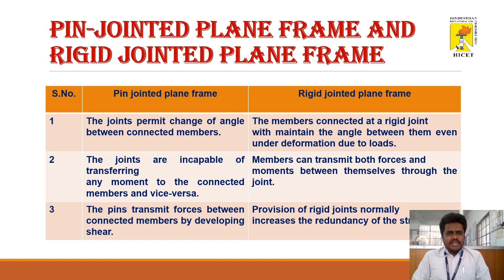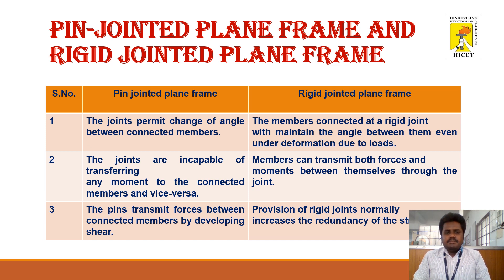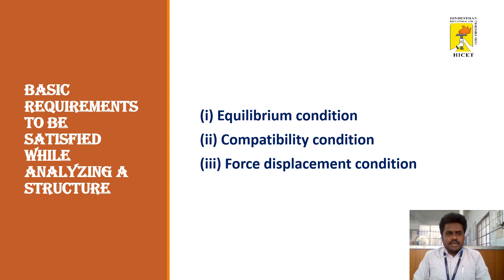Comparing pin jointed plane frames and rigid jointed plane frames: in pin jointed frames, joints permit changes of angle between connected members and are incapable of transferring moments. In rigid jointed frames, members maintain their angles even under deformation due to loading, and the rigid joints transmit both forces and moments between connected members. Also, in pin jointed frames, pins transmit forces by developing shear, while rigid joints increase the redundancy of the structure.